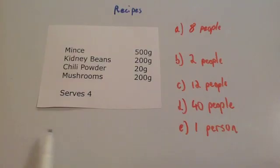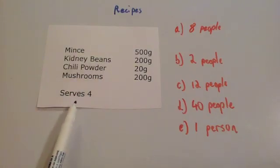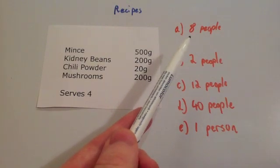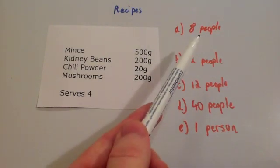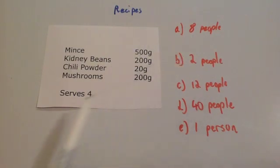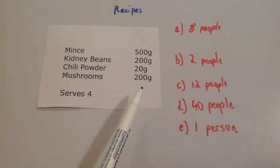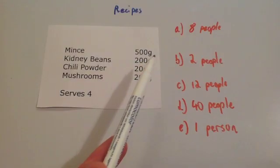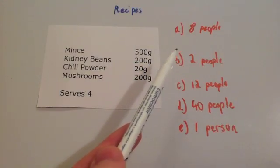So if I had a recipe like this and it served four people and I wanted to work out how much of each ingredient I needed for eight people — because eight people is double four people — I would just double each one of these ingredients. So instead of 500 grams of mince, you've got 1,000 grams of mince or one kilogram.